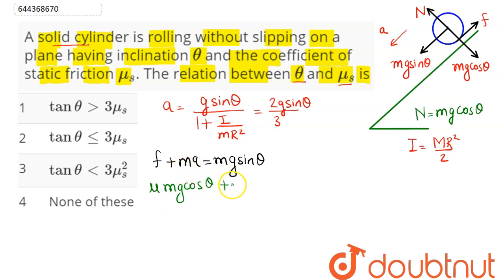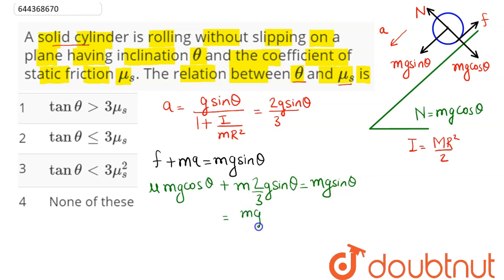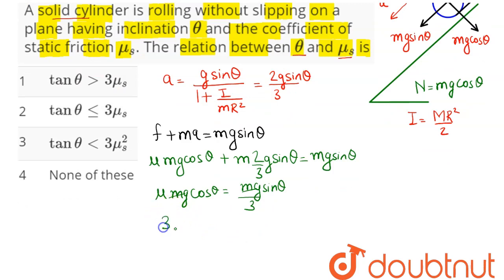So friction equals mu times mg cos theta. Substituting ma where a equals (2/3)g sine theta, we get: mg sine theta minus m times (2/3)g sine theta equals mu mg cos theta. This simplifies to mg sine theta divided by 3 equals mu mg cos theta. Cancelling mg from both sides gives: sin theta divided by 3 equals mu cos theta, so 3 mu equals sin theta divided by cos theta, which equals tan theta.